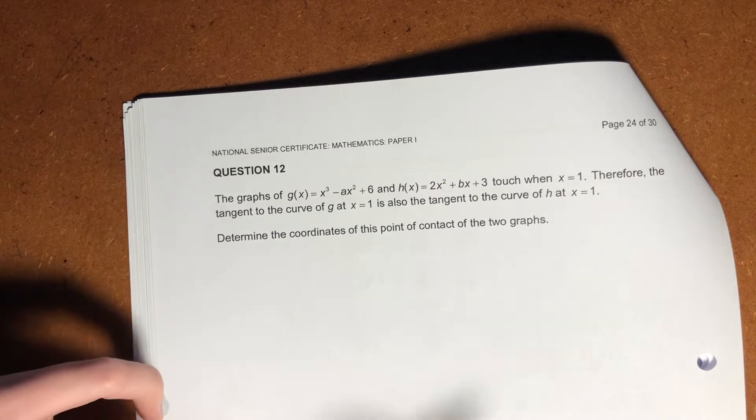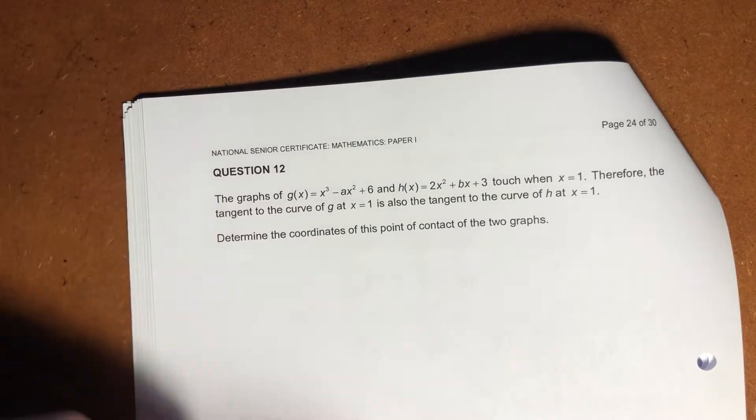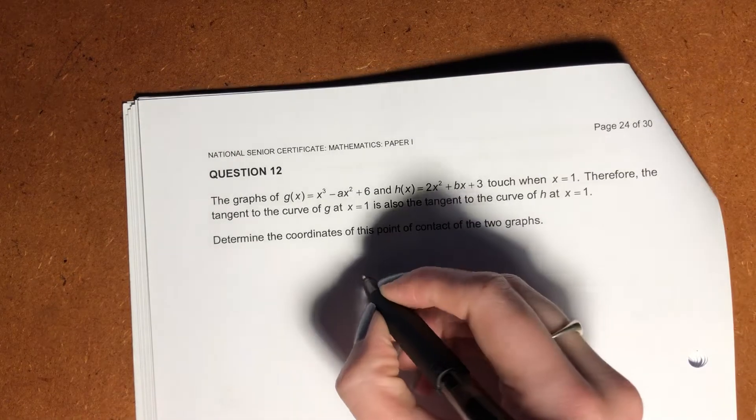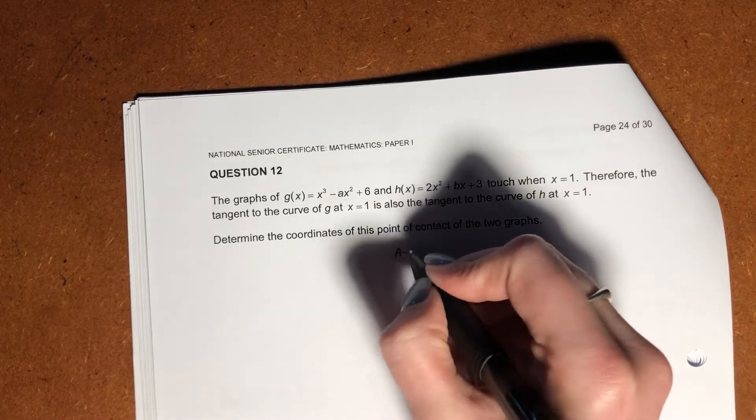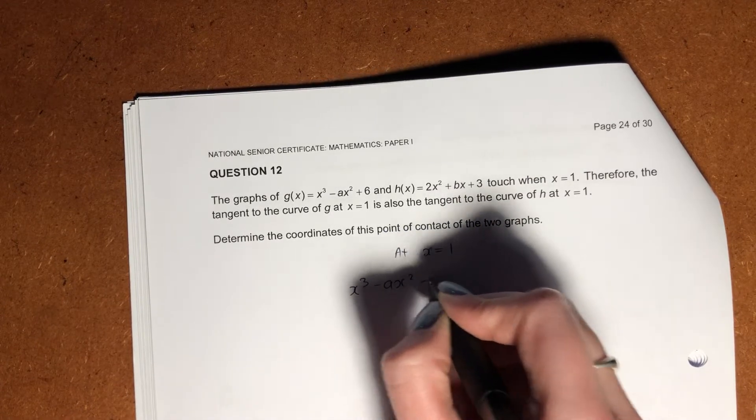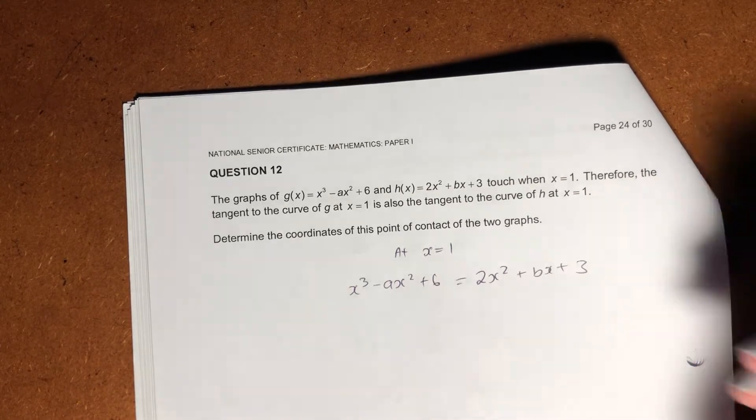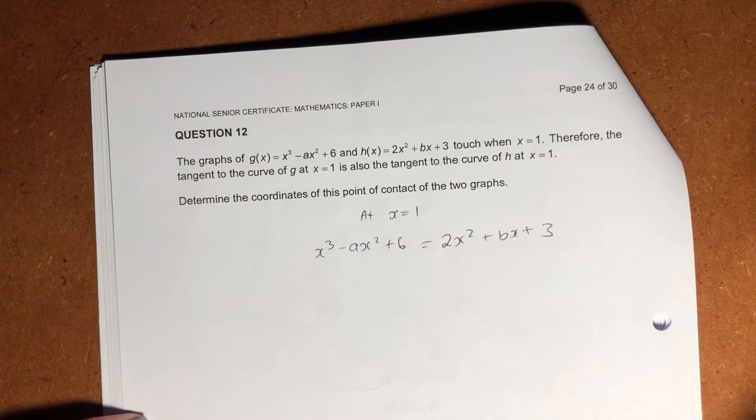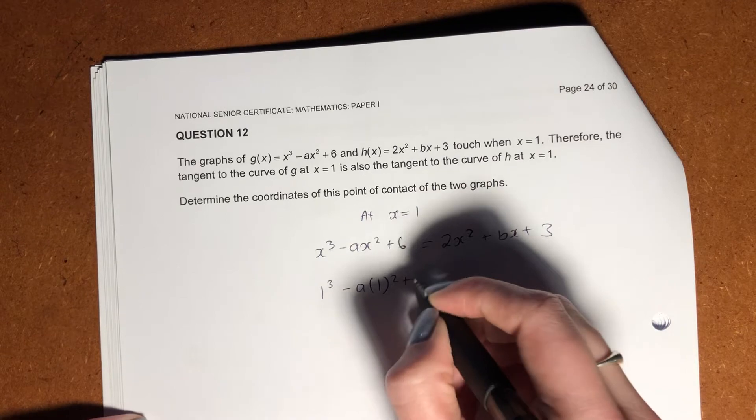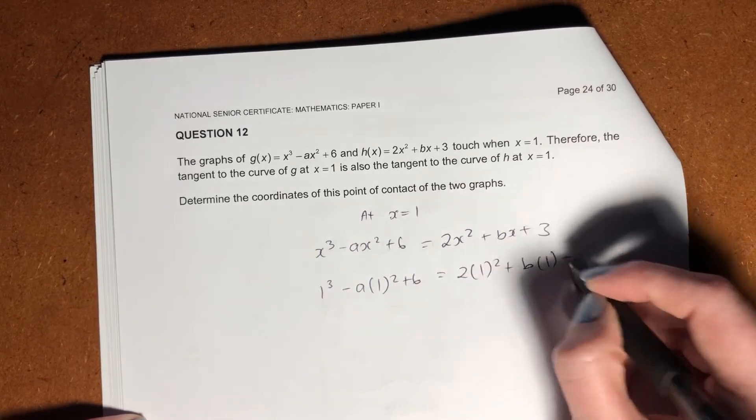So now, we know that the point of contact, we know that its x value is going to be 1. That's given, right? So we know that. But we need to use the information that's given to help us. So let's start by saying, well, we know at the point of intersection, so at x equals 1, we know that g, 3 minus ax squared plus 6 is going to equal 2x squared plus bx plus 3. Okay, we know that. They told us that. So let's sub in the 1. So it becomes 1 to the 3 minus a times 1 squared plus 6 equals 2 times 1 squared plus b times 1 plus 3.